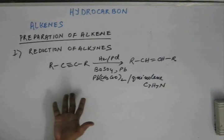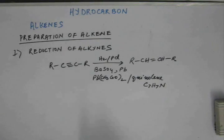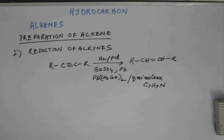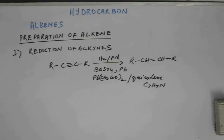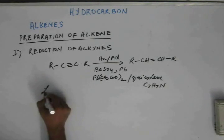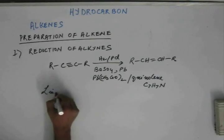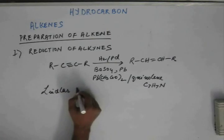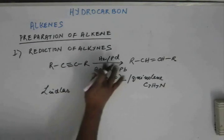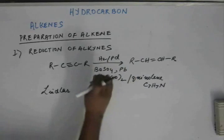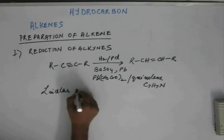We have a reduction of alkyne into alkene, and we are happy that the alkene didn't go further into the reaction. Alkene will be the final product. So this is one of the methods to produce alkene. Now this reaction has a special name — this poisoned palladium is called Lindlar catalyst.